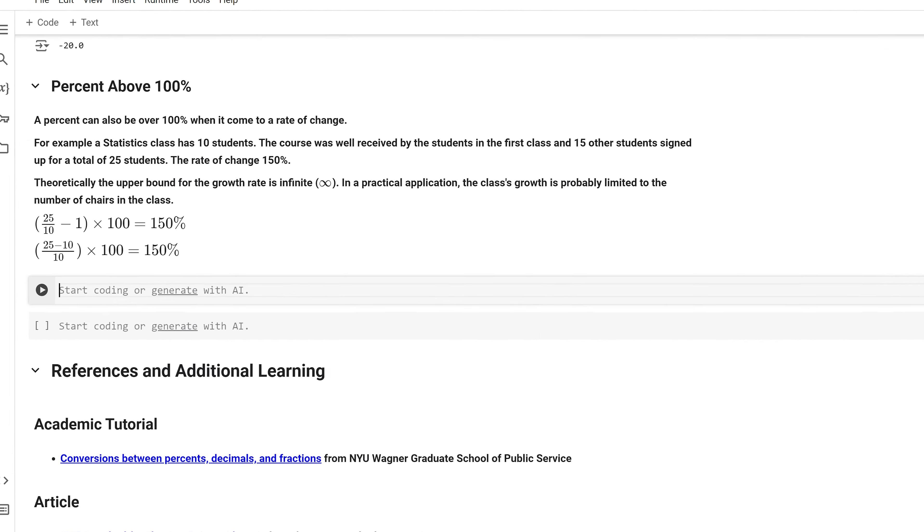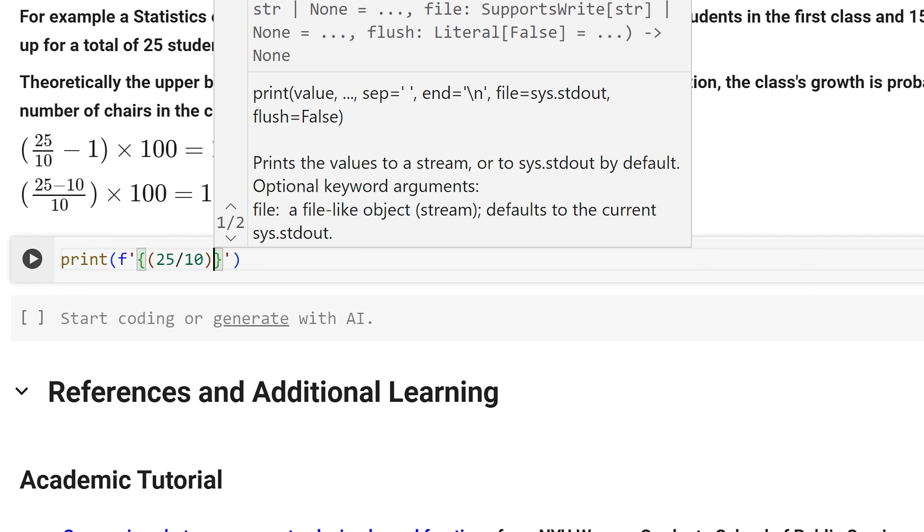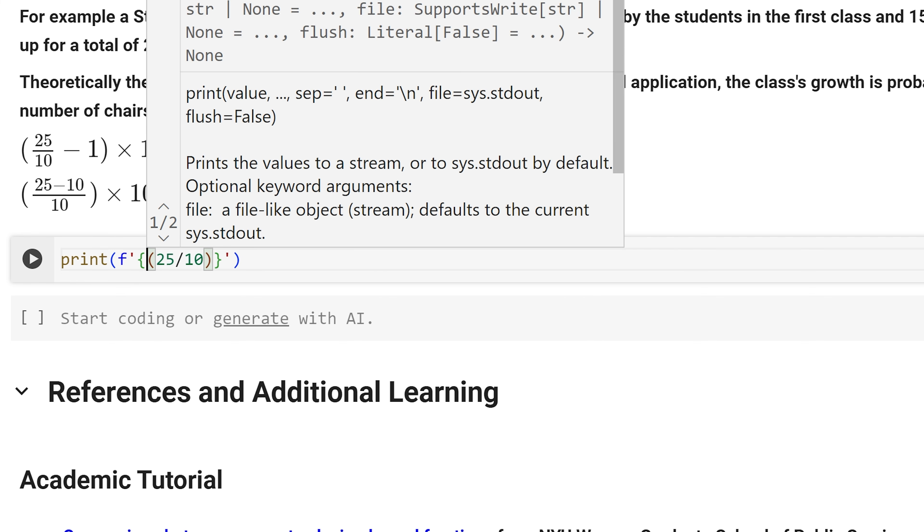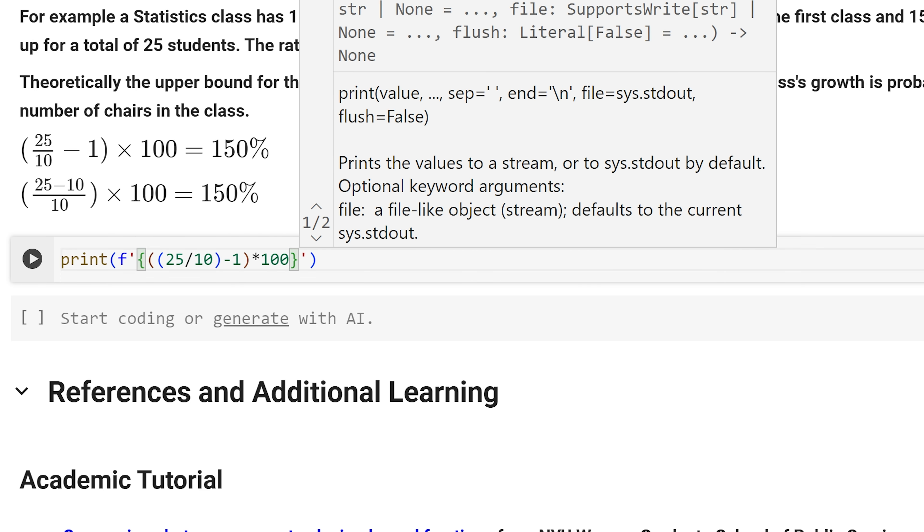Let us calculate this in Python. In the numerator, I am going to put the current value, 25 students, divide it by the initial class value, 10 students, subtracted by 1, and multiplied by 100, and we get 150 percent.